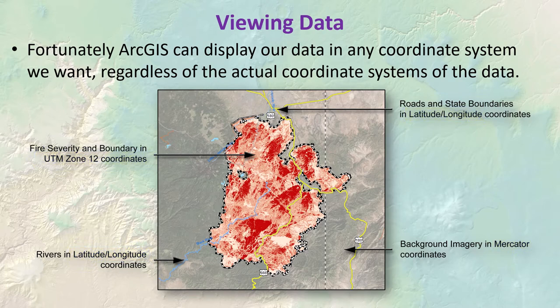If you looked at the individual vertex coordinates, the rivers and roads in latitude-longitude would have x values around -109 and y values around 34. The fire severity in UTM Zone 12 would have x values around 650,000 and y values around 3.7 million. The web mercator background imagery would have x values around 12 million and y values around 3.7 million. These are radically different coordinate systems, yet ArcMap brings them all together — something GIS systems didn't used to be able to do.